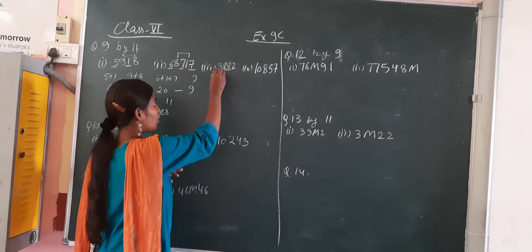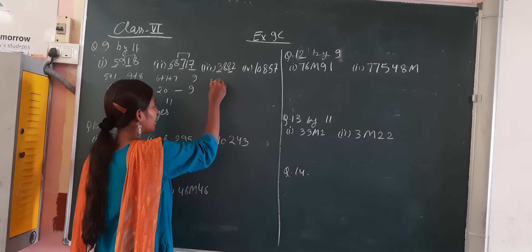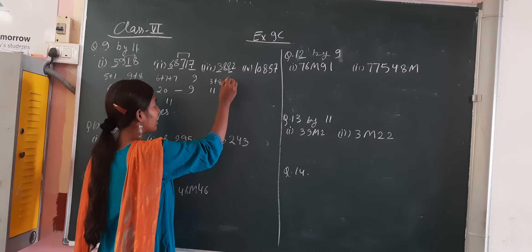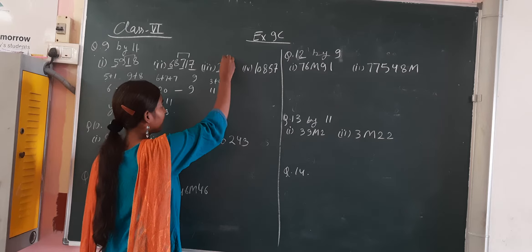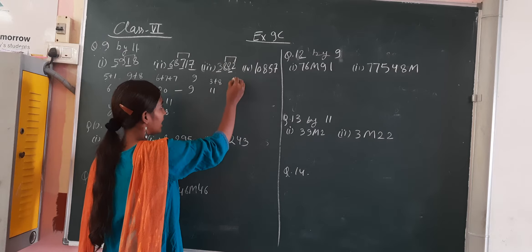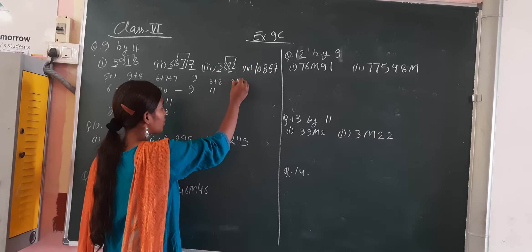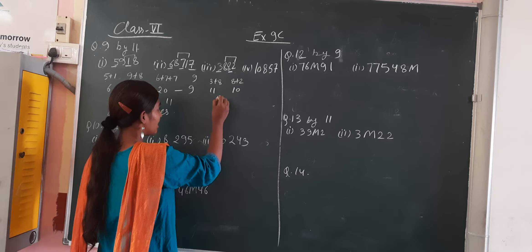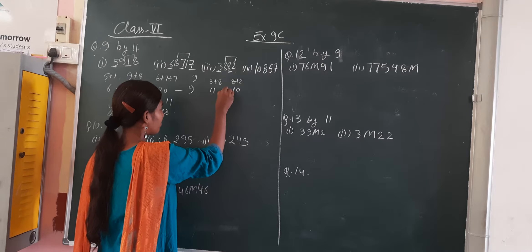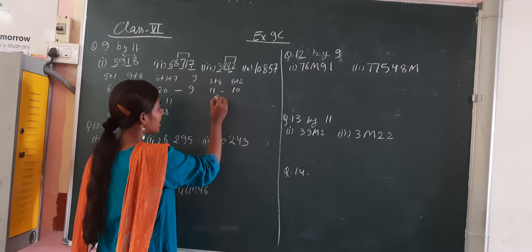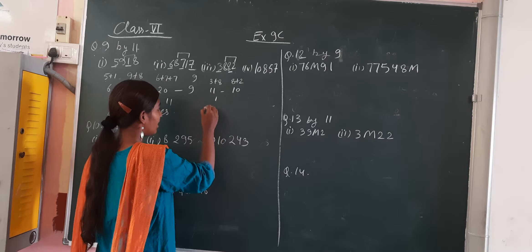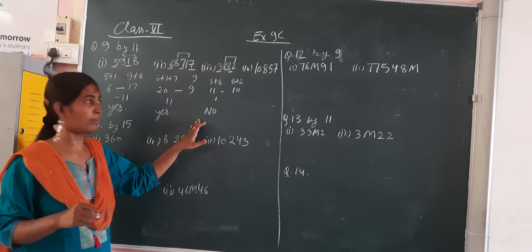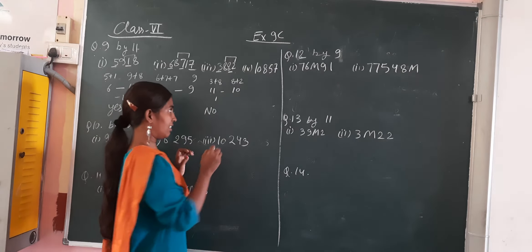Now select the odd place digits: 3 plus 8 is 11. Select the even place digits: 8 plus 2 is 10. 11 minus 10 is 1. So the answer is coming 1. So it is not divisible by 11.